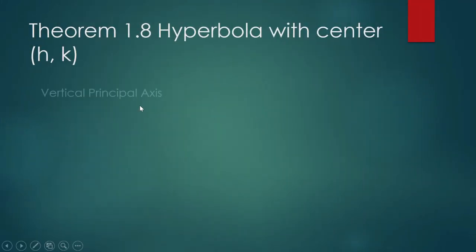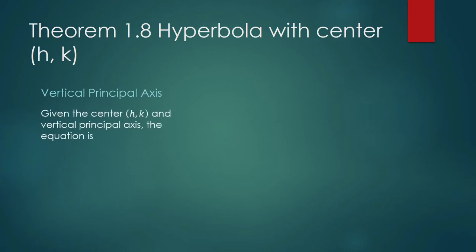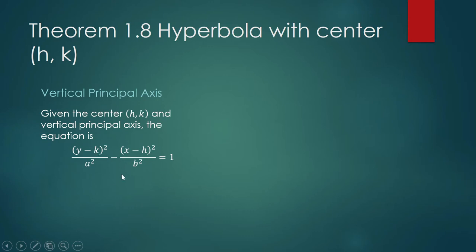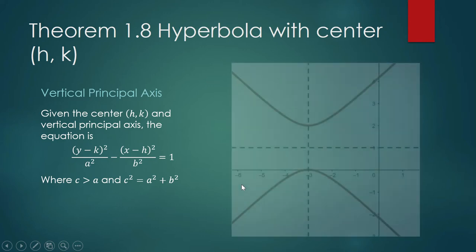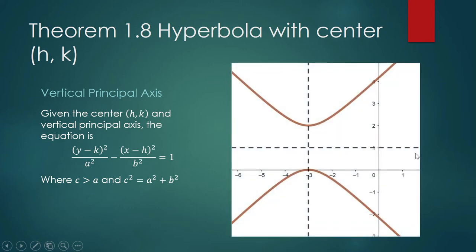We have another set of equations — that would be when the principal axis or the transverse axis is vertical; it is standing up. So be careful: H is the x-coordinate of our center HK. The denominator that comes after subtraction is always B squared. B has something to do with locating the endpoints of your conjugate axis; it's always the denominator after subtraction. C is greater than A, and C squared equals A squared plus B squared.